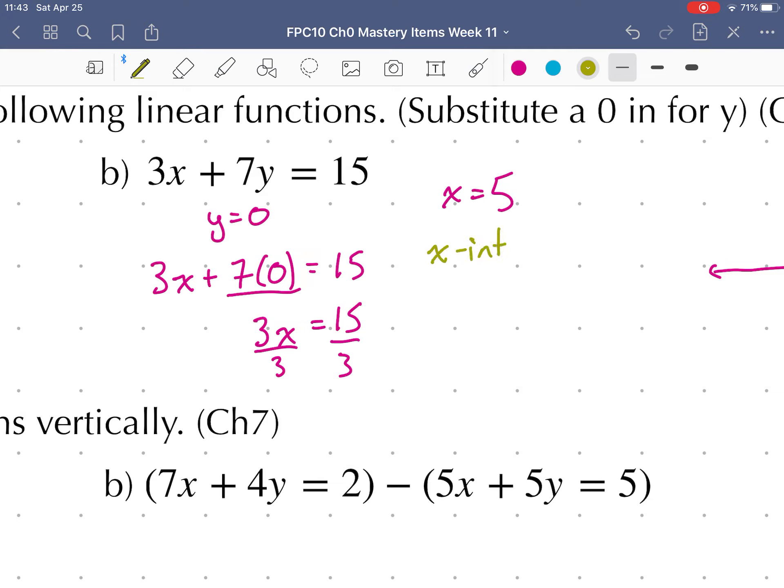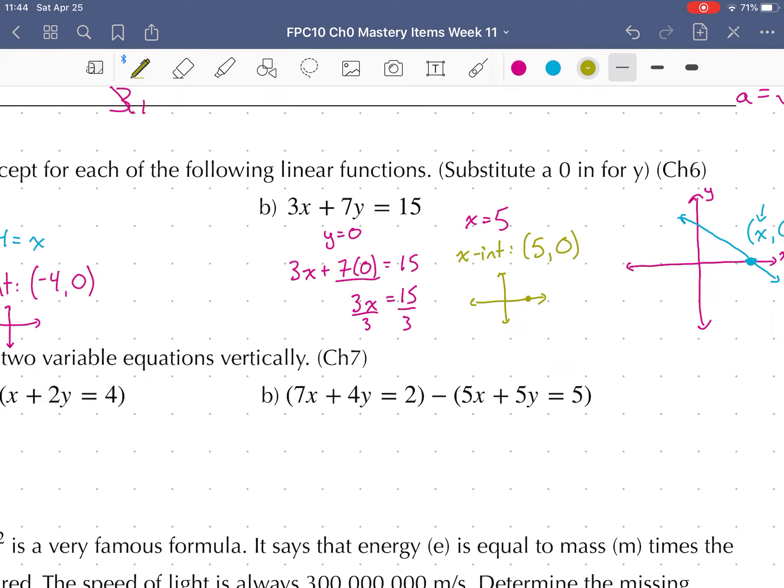Therefore, our x-intercept is at the point when x equals 5 and y equals zero. It'll be somewhere over here where it crosses the x-axis. If our x-intercept is found when y equals zero, our y-intercept is found when x equals zero.